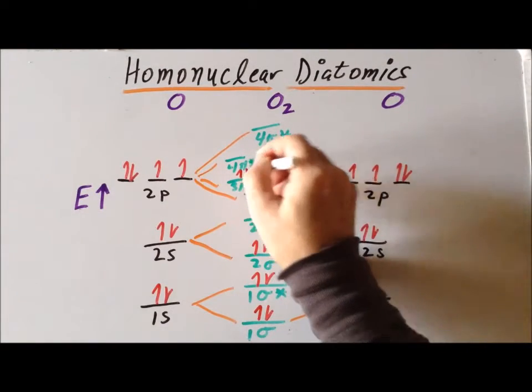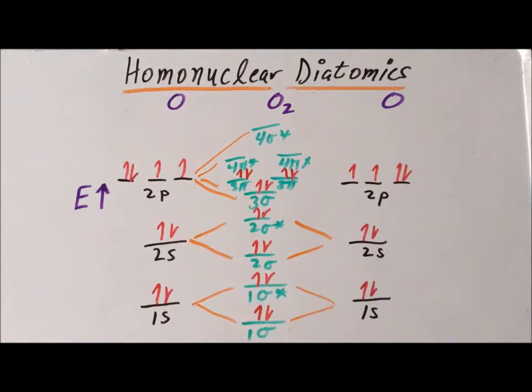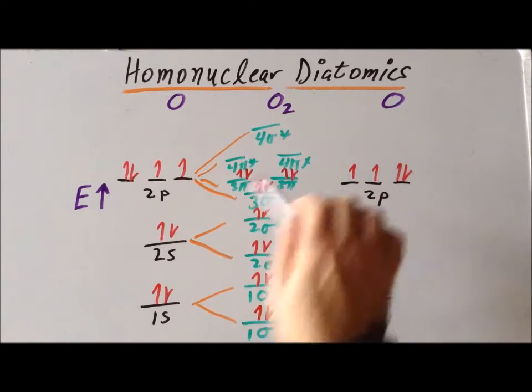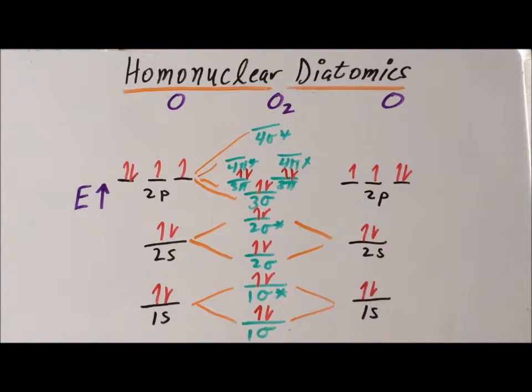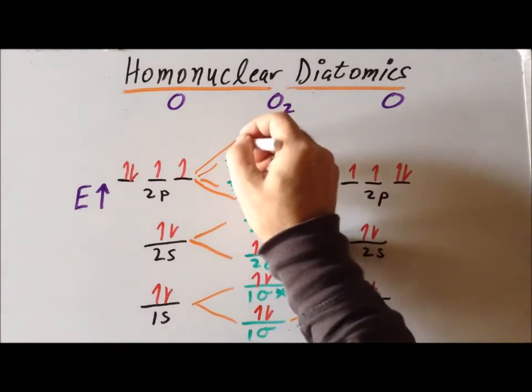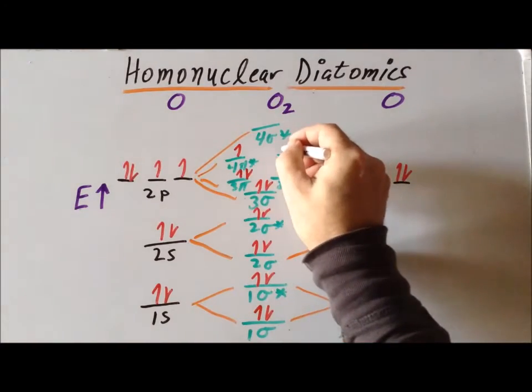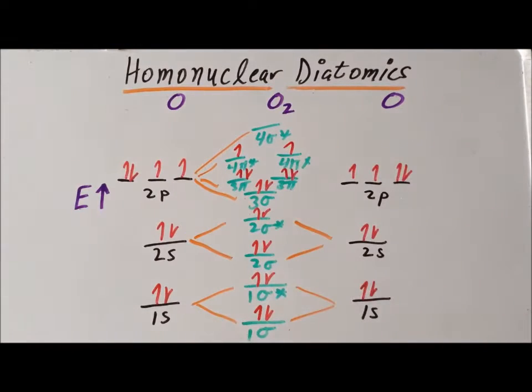The next two electrons finish up and fill up those two particular orbitals. So now we have 2, 4, 6, 8, 10, 12, 14 electrons. So we have two electrons left. So again, applying Hund's rule, you put one electron in 4 pi star and the other electron in the other 4 pi star.